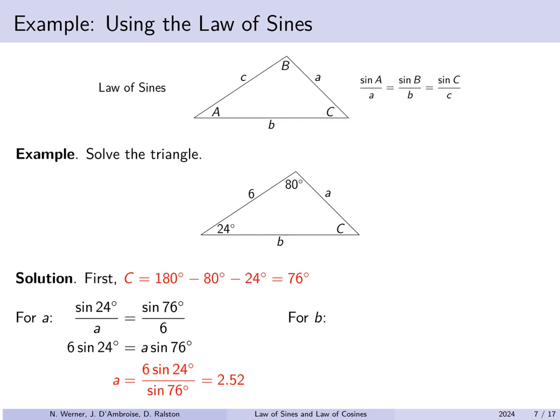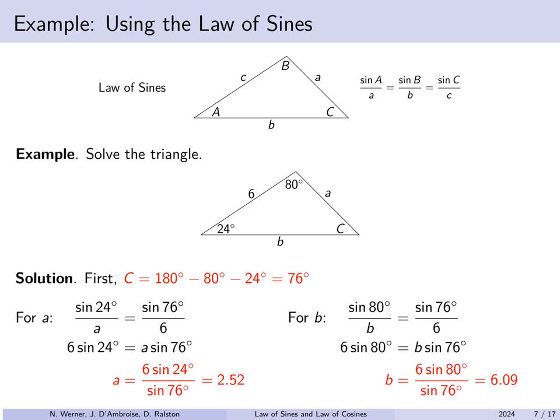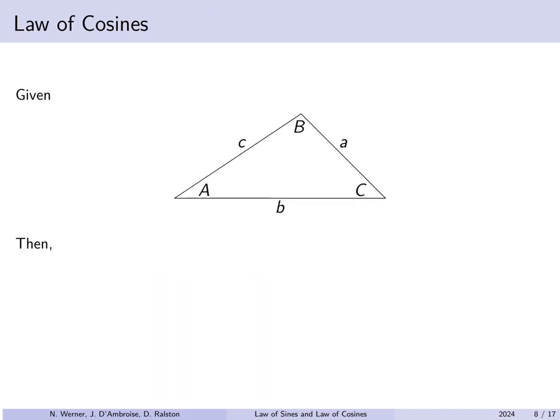For length b: the sine of the angle across from it, which was 80 degrees, divided by missing length b must equal the sine of 76 degrees divided by 6. Cross-multiplying and solving gives b approximately 6.09. Note that what's very handy is having both one angle and the length across from it. If you have two angles you can automatically find the third, and then whatever one side you have is across from a known angle. So the law of sines is most useful when you know all the angles and just one side.